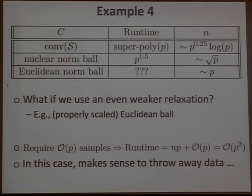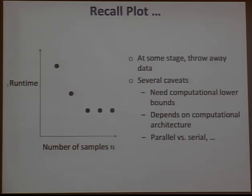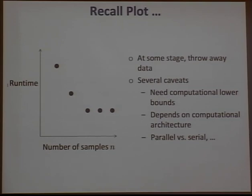In cases where preprocessing dominates, it makes sense to throw away data — consistent with the flattening of the trade-off plot seen at the beginning. There are caveats: adding numbers is efficient in parallel, whereas projection must be done more serially. To make formal claims you need computational lower bounds. But depending on the algorithm space and computational infrastructure, there will be cases where accessing extra data actually costs computationally in ways that are not beneficial.